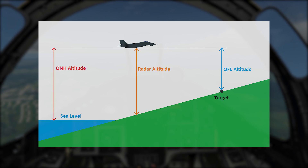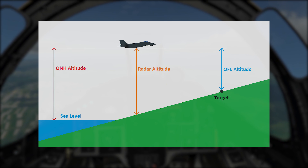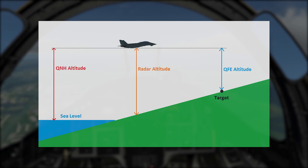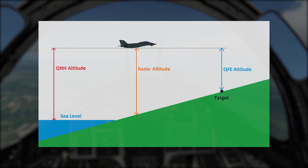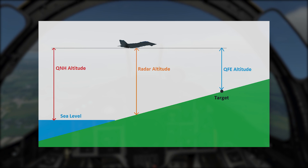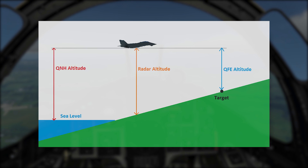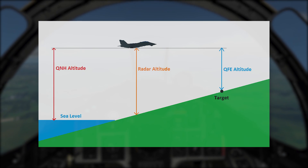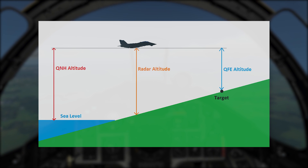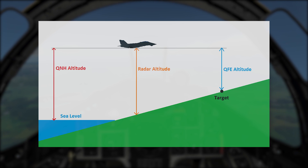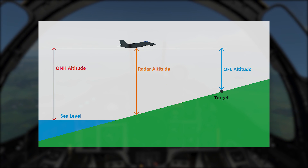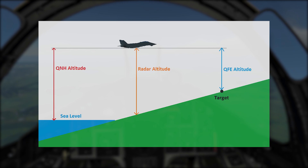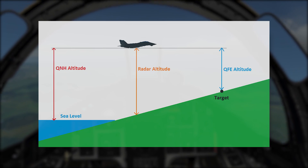QFE on the other hand shows the altitude above terrain at a certain point — the point where the QFE has been measured. For example, if you are at an airfield and enter the QFE for that airfield, the altimeter will show zero. If you don't know the QFE for an airfield, you can just dial down the altimeter to zero and then you have the QFE for that airfield. Now, any point in the terrain at a different altitude will have its own QFE. You can compare the QFE setting on the altimeter to a radar altimeter. However, the QFE setting doesn't change automatically and it's only valid for one point, or if the area is very flat, for a small area where the QFE will be correct.